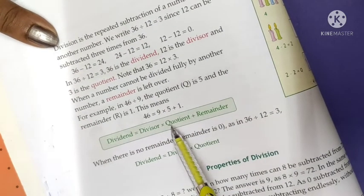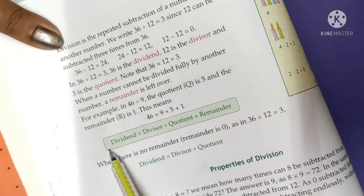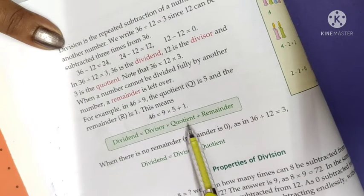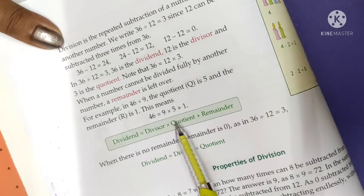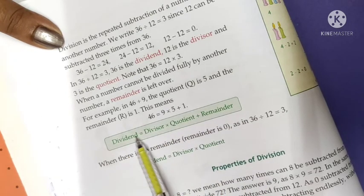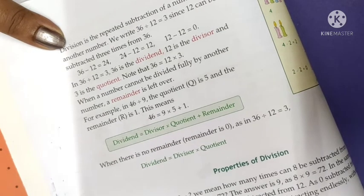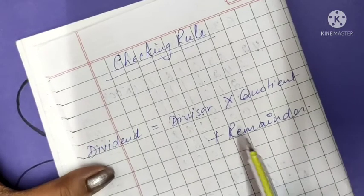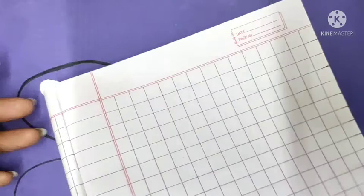Students, pay attention here. If we want to check our answer — whether it is right or not — we have a very simple fundamental theorem: dividend equals divisor into quotient plus remainder. We simply multiply the divisor and quotient, then add the remainder. If we get the same dividend, our answer is right. Write this checking rule in your notebook. Now starting with question number 11.